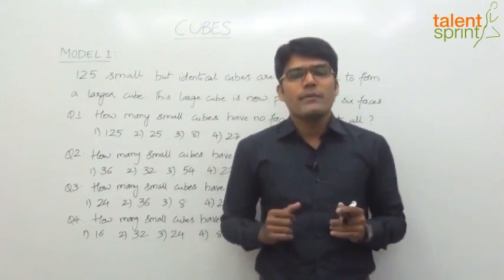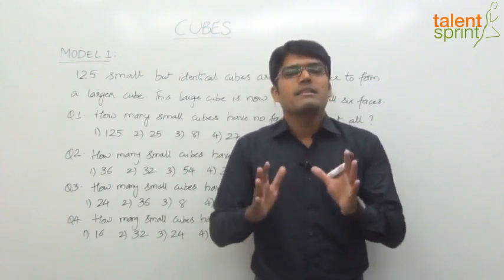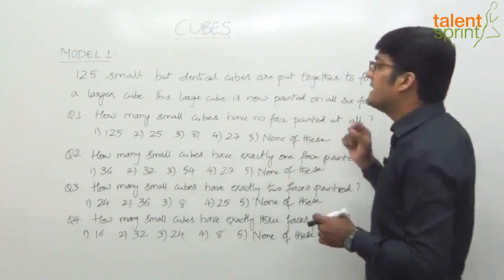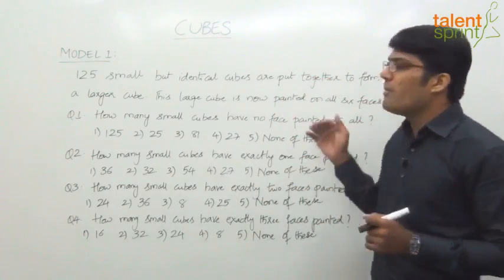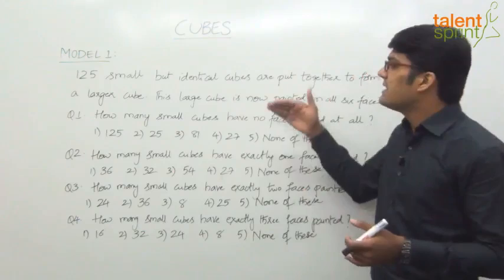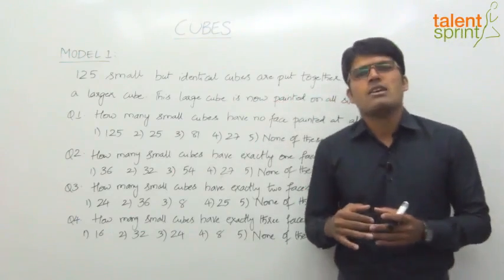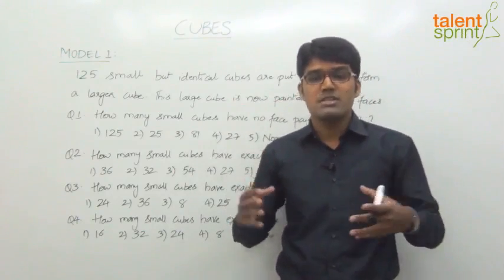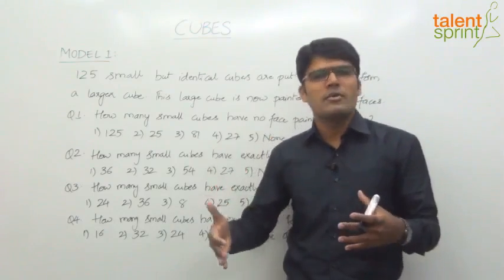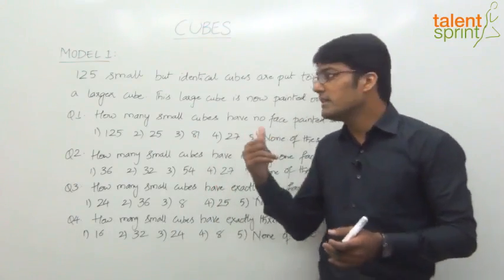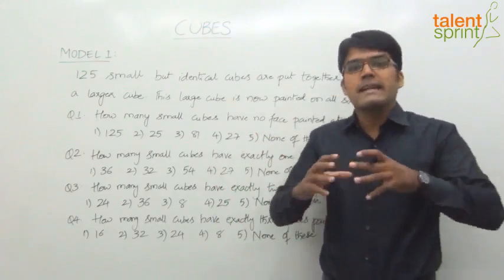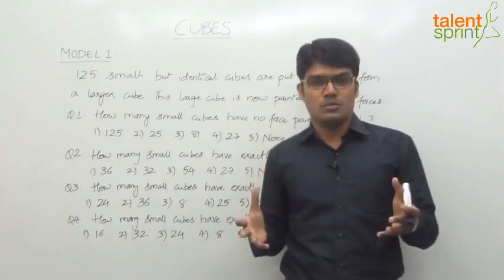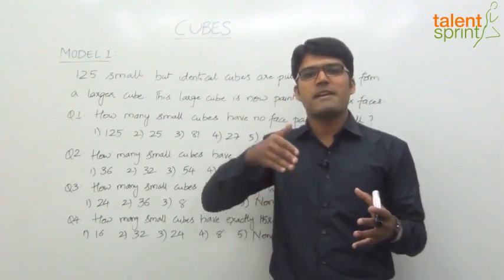Let's look at Model 1 where all six faces are painted in the same color. The question says 125 small but identical cubes are put together to form a larger cube. This large cube is now painted on all six faces. This is the opposite of what we have discussed — generally a larger cube is painted and then cut into smaller cubes. But here 125 small cubes are arranged to form a larger cube. The only way to arrange these is 5 by 5 by 5.